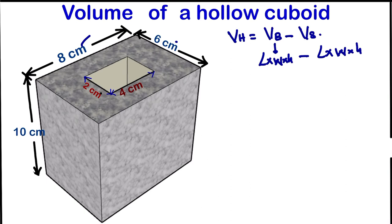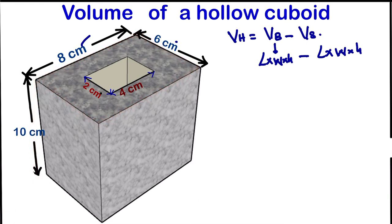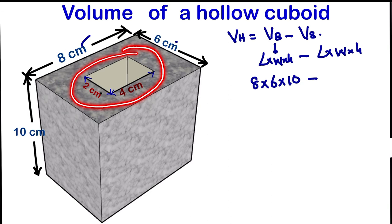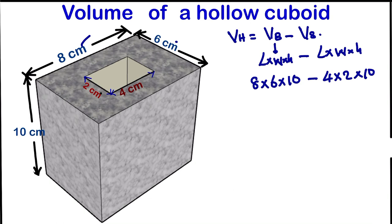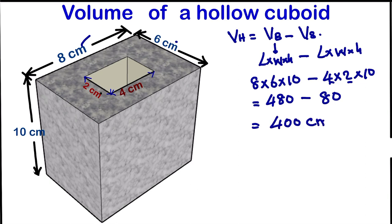If we consider the big cuboid, we have length times width times height: 8 times 6 times 10, minus the cuboid that forms the hollow space — length times width times height — which is 4 times 2 times 10. The height remains the same, which is 10. So 8 times 6 times 10 is 480, minus 4 times 2 times 10. So our answer will still be the same: 400 centimeters cubed.